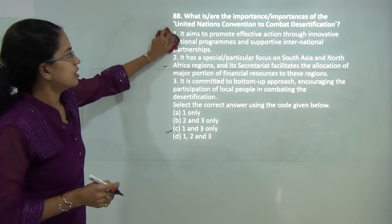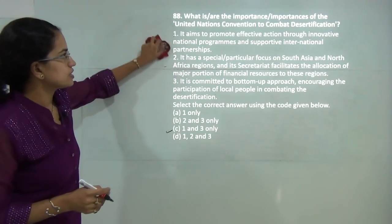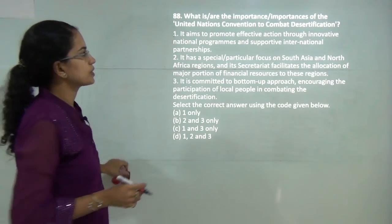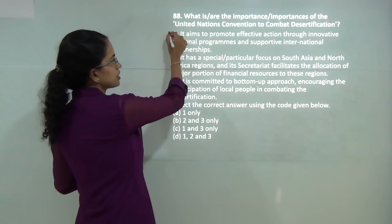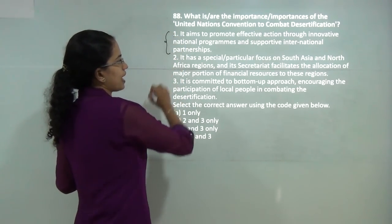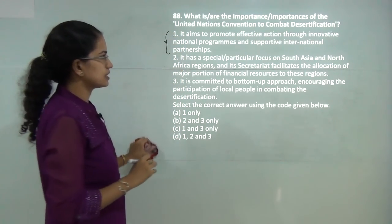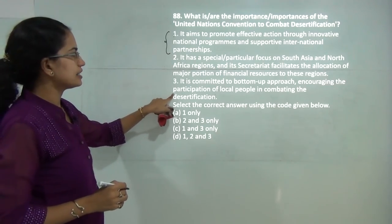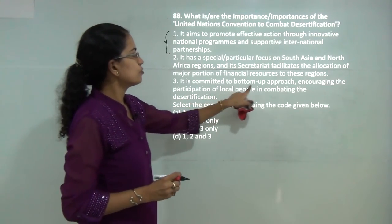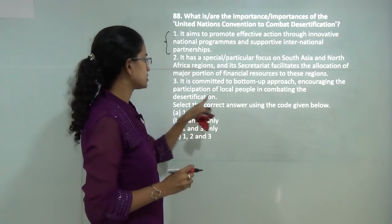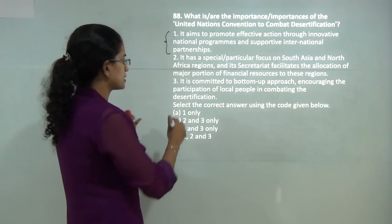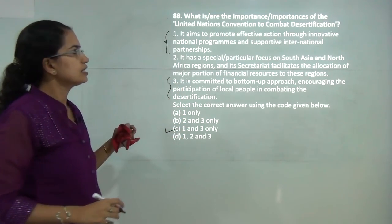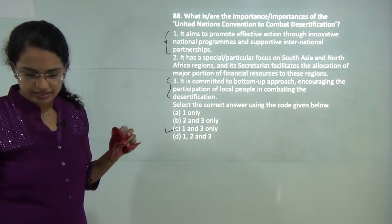The UN Convention to Combat Desertification talks about promoting action through innovation of national programs and international partnerships — that is correct. It is also a bottom-up approach that encourages participation of local people. So 1 and 3 would be the correct answers here.